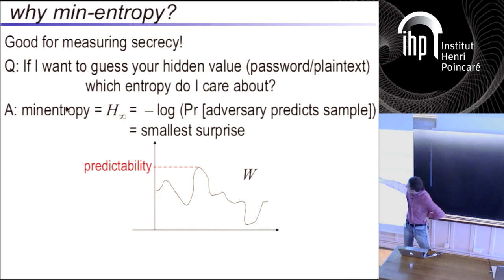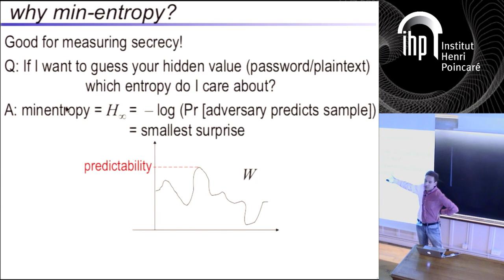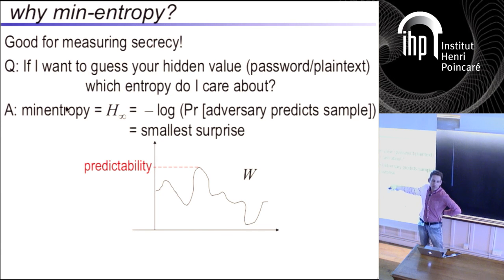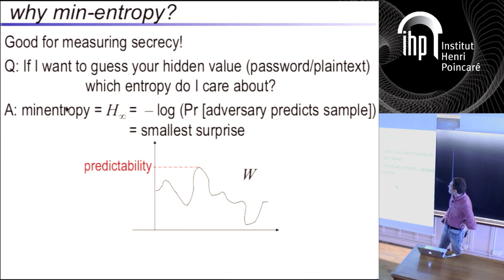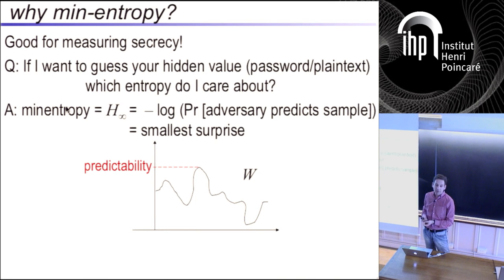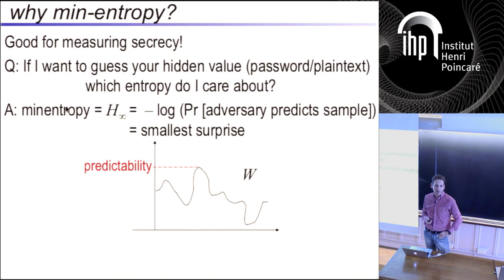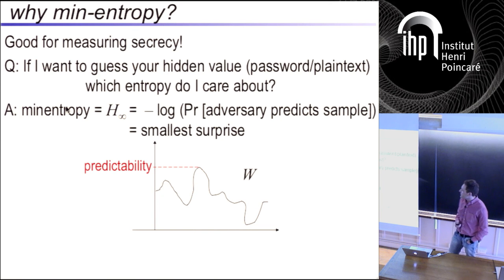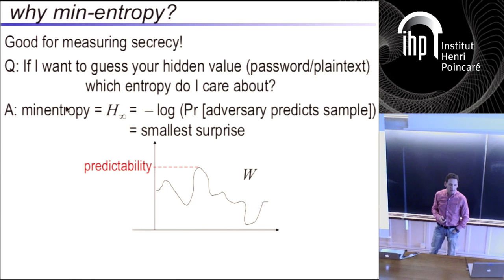Min-entropy is the notion you care about if you're worried about your password being guessed. It's the smallest surprise in the distribution. 12345 is not a surprising password — that's the one the adversary is going to go for. Another way to think about it: it's the log of the probability that the adversary predicts the sample. If the adversary has one chance to guess your password, they'll go for the maximum probability one. That's the entropy measure you want, and this functional definition is useful later.